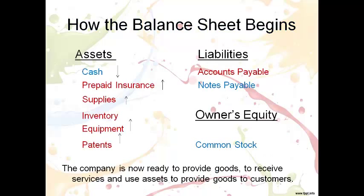The cash is then used to purchase assets such as prepaid insurance, supplies, inventory, equipment, patents, etc. Cash decreases and the other assets increase. Inventory is often purchased on account, which creates the liability accounts payable. The company is now ready to provide goods, receive services, and use assets to provide goods to customers.